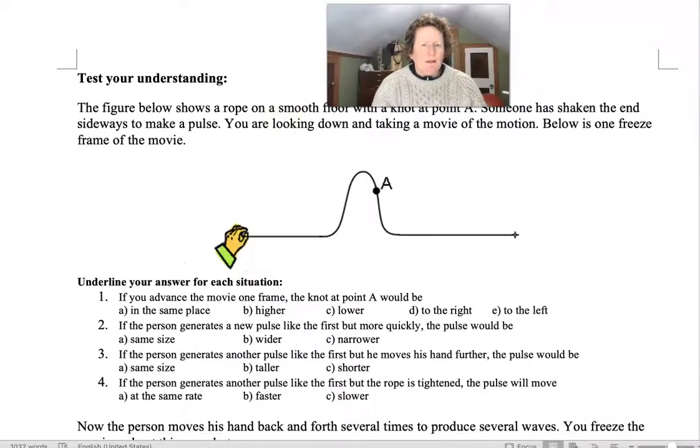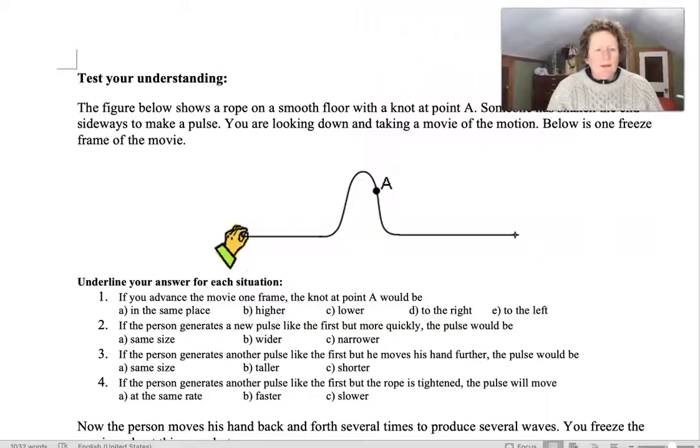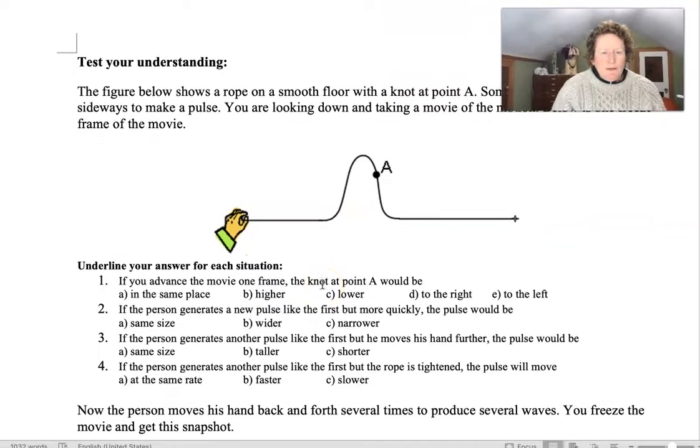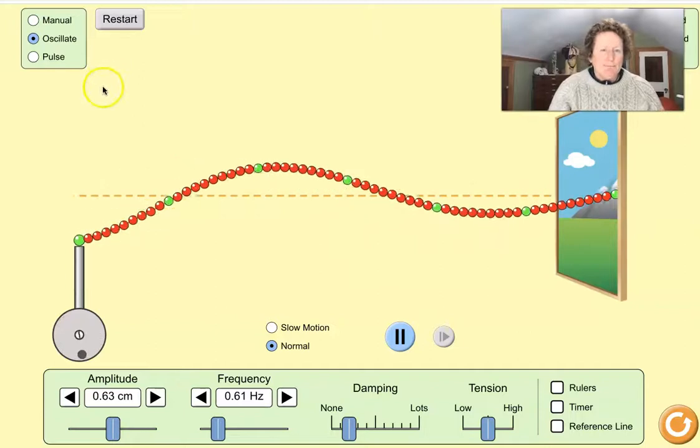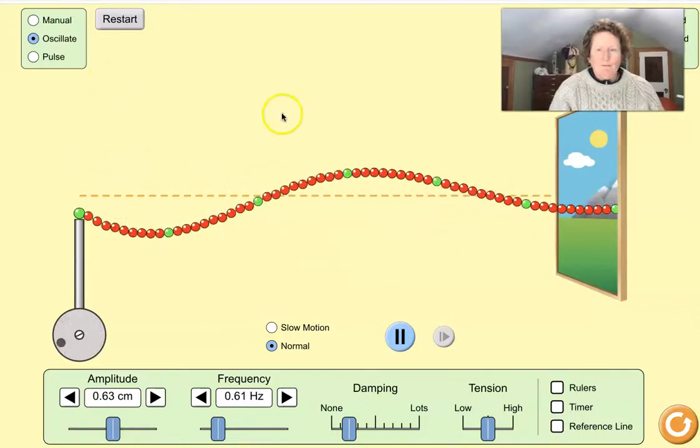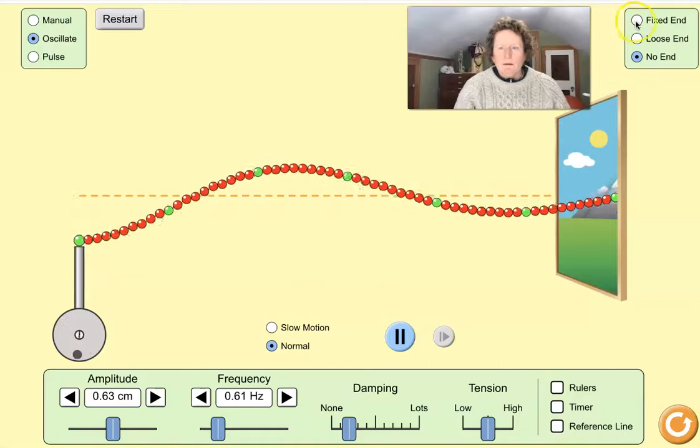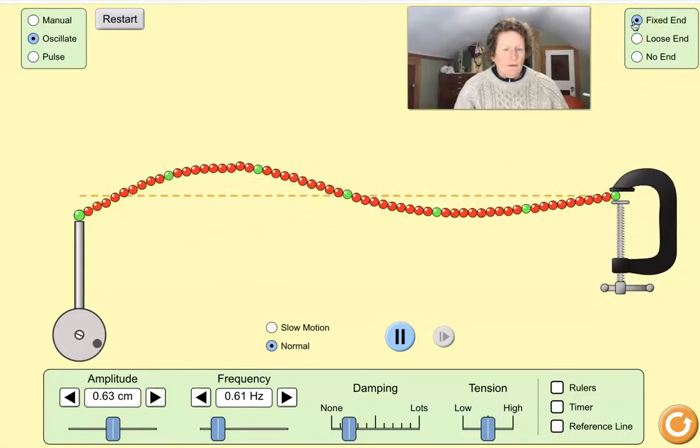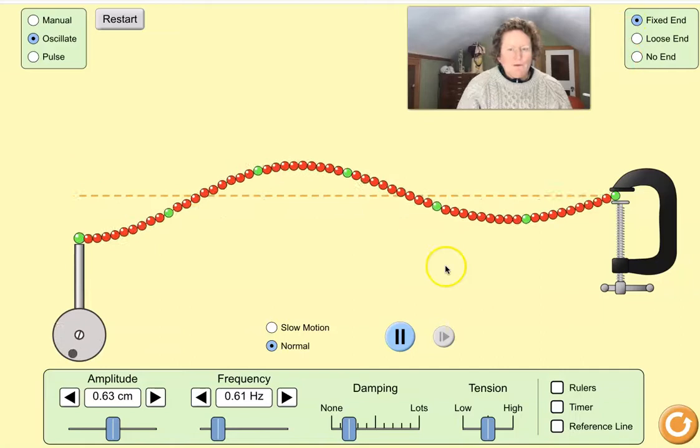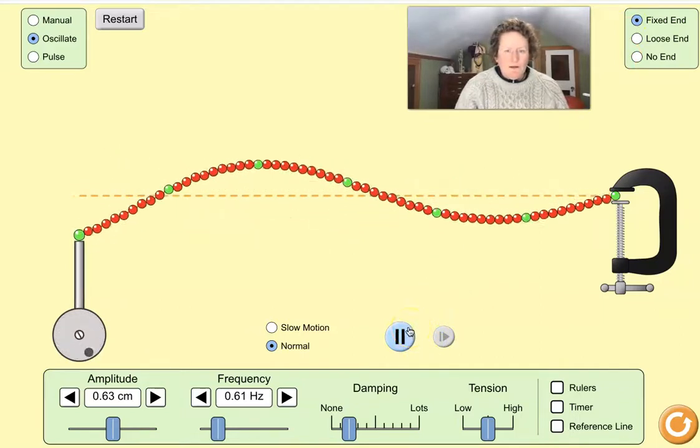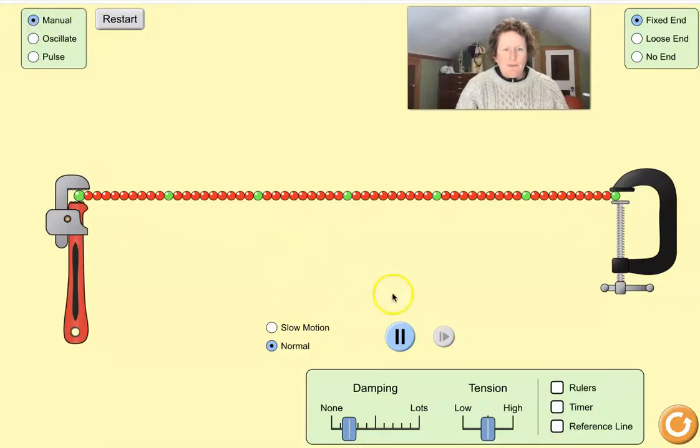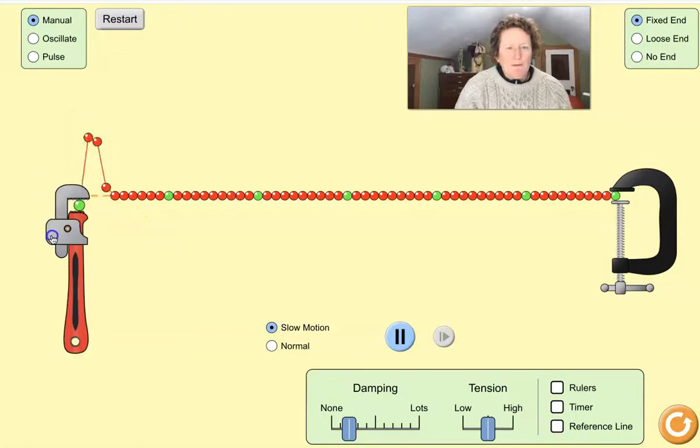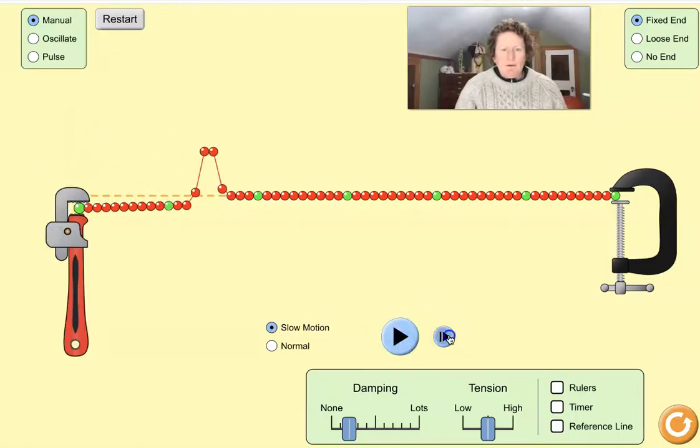So, test your understanding. A lot of students have struggled with this. And the one hint I can give you is, if you go into the simulation and use oscillation, you can basically do the same thing. So, let's go into oscillation. Let's have a fixed end. So, let's get a little bit of a wave going here. Actually, this works better in manual, on slow motion. You can put one wave in, and you can stop it, and you can advance it.